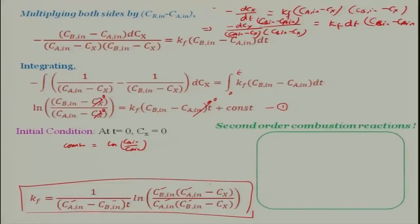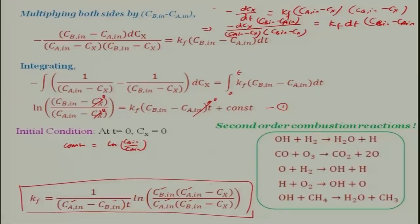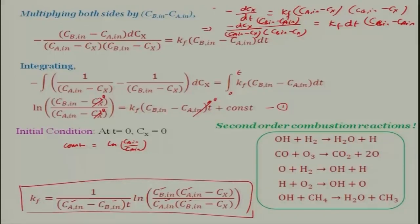There are several second order combustion reactions which take place at the elemental level. For example: OH + H2 → H2O + H; CO + O3 → CO2 + 2O; O + H2 → OH + H; H + O2 → OH + O; and OH + CH4 → H2O + CH3. Some examples are given here — there may be several more.